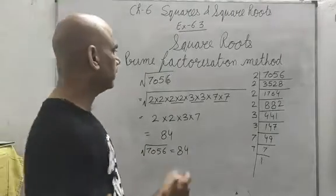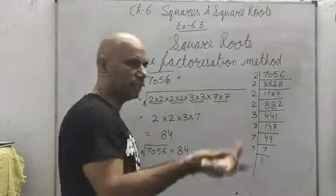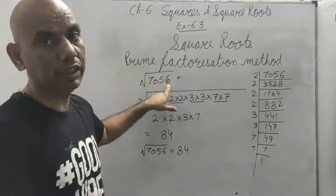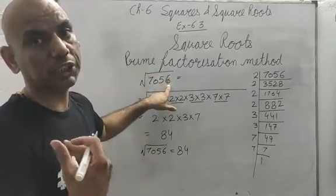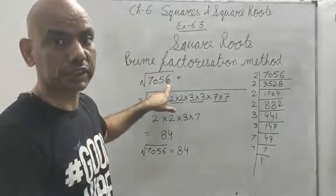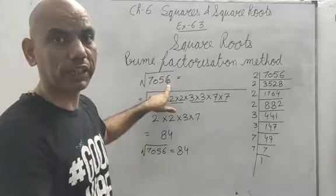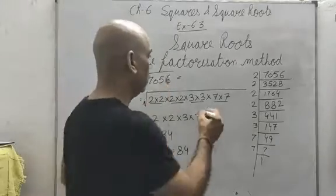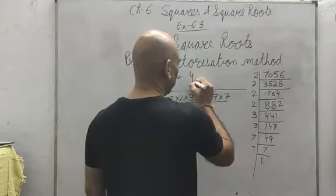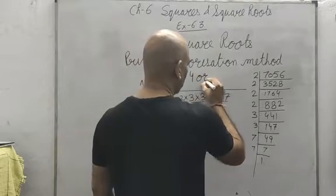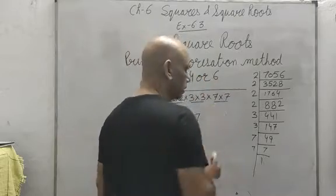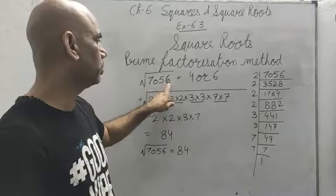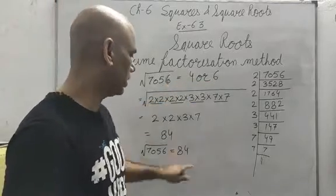He will ask you: what will be the unit place? 6 appears in the square of 4 (4² = 16) and in the square of 6 (6² = 36). So the unit place will be either 4 or 6.